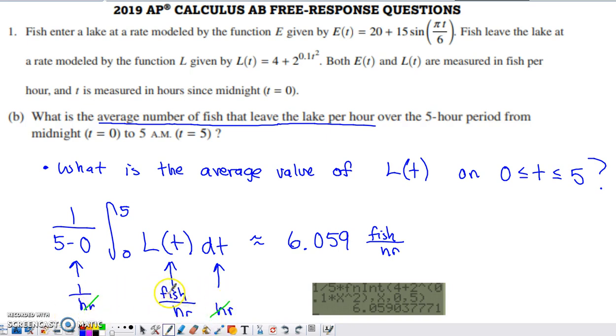If I have one over hours here and hours here, and all of these units are multiplied together, I'm going to have those units cancel and my net result is measured in fish per hour. And reread that question. Does it make sense for your final answer to have units of fish per hour if you're trying to find the average number of fish that leave the lake per hour? It basically says that within the question that we're asked. So we are doing the right calculation here.